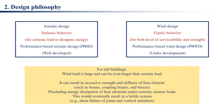For tall buildings, wind load is large and can be even larger than seismic load. It can result in excessive strength and stiffness of fuse elements — such as beams, coupling beams, and braces — precluding energy dissipation of fuse elements under extreme seismic loads. This would eventually result in a brittle system, for example shear failure of joints and vertical members.